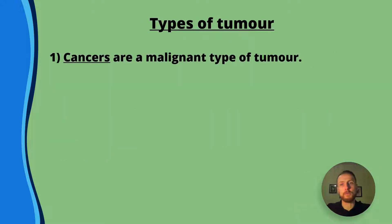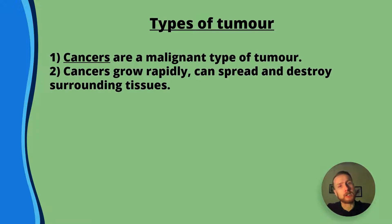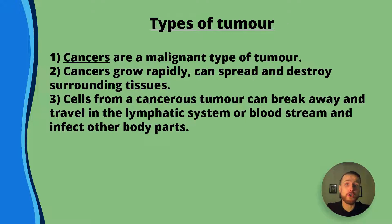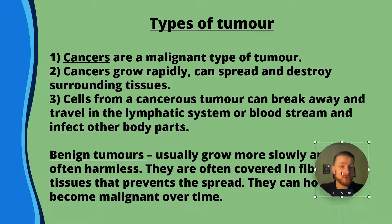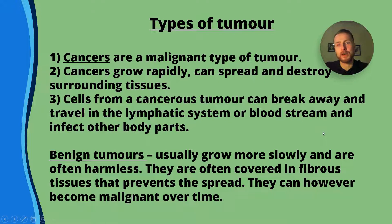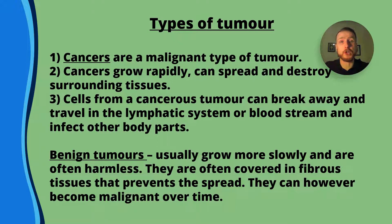Turning to the types of tumour: cancers are a type of malignant tumour. Cancers grow rapidly and can spread and destroy surrounding tissue — remember, a tissue is made up of similar cells carrying out a similar function. Cells from a cancerous tumour can break away and travel in the lymphatic system or bloodstream, spreading to other areas of the body. Benign tumours aren't as much of a concern because they don't directly damage surrounding tissues and are usually slower-growing, or their spread is stopped by fibrous tissue. However, they can still turn malignant, so it's good to get them checked by your GP.